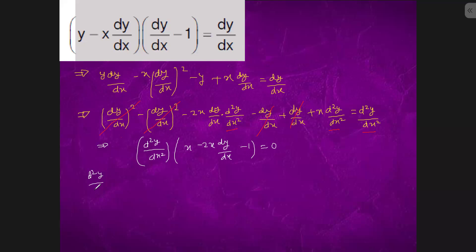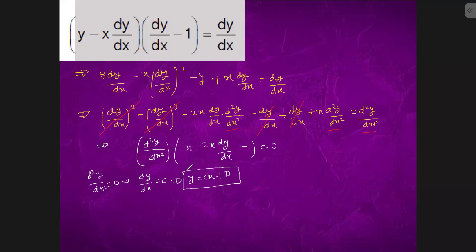So d²y/dx² equals 0. This implies dy/dx equals c, which implies y equals cx plus d.